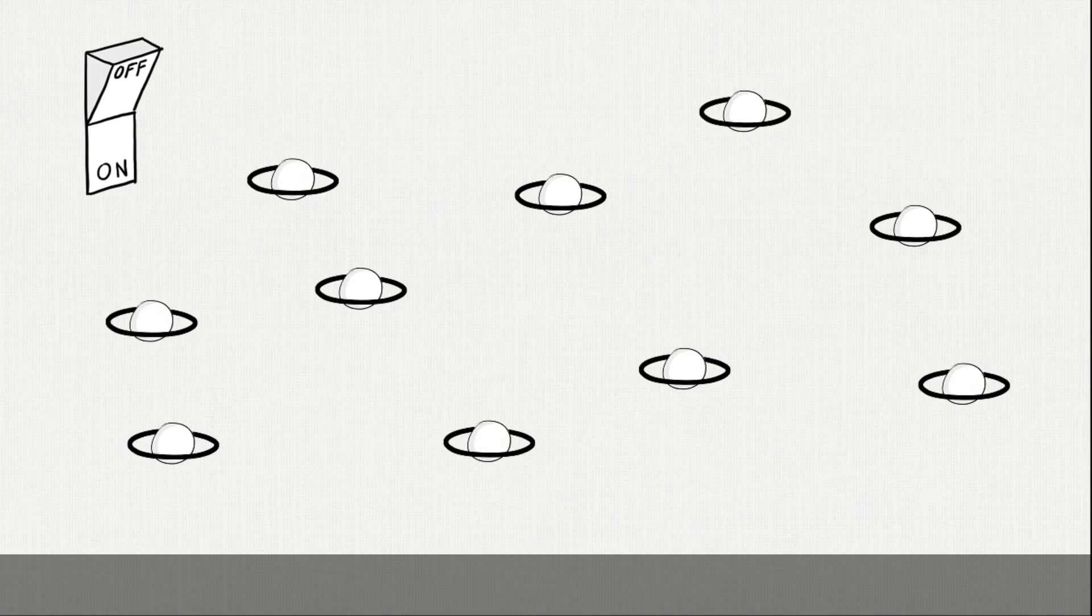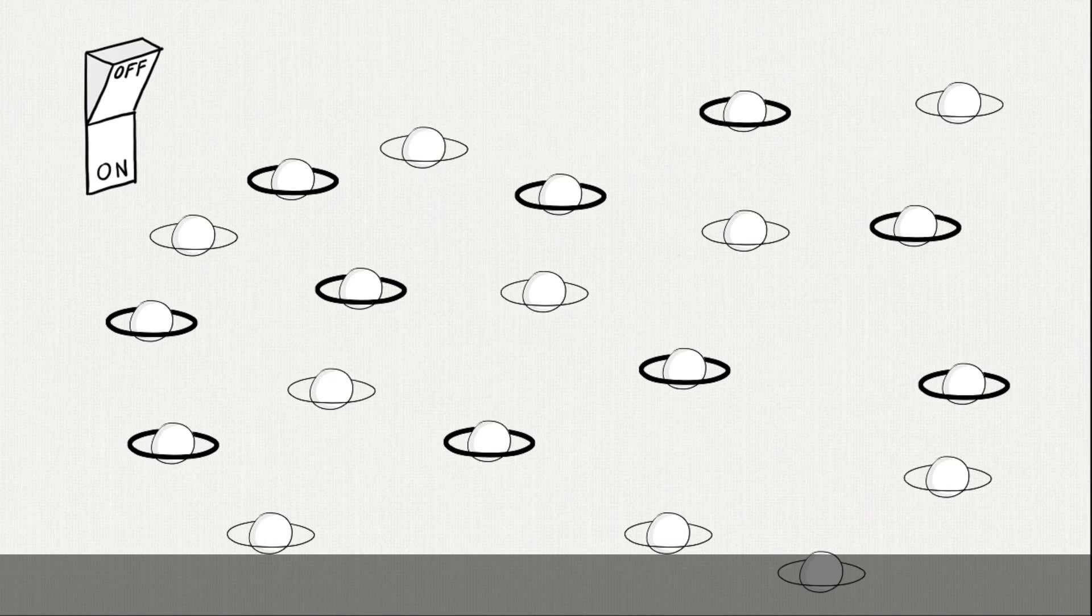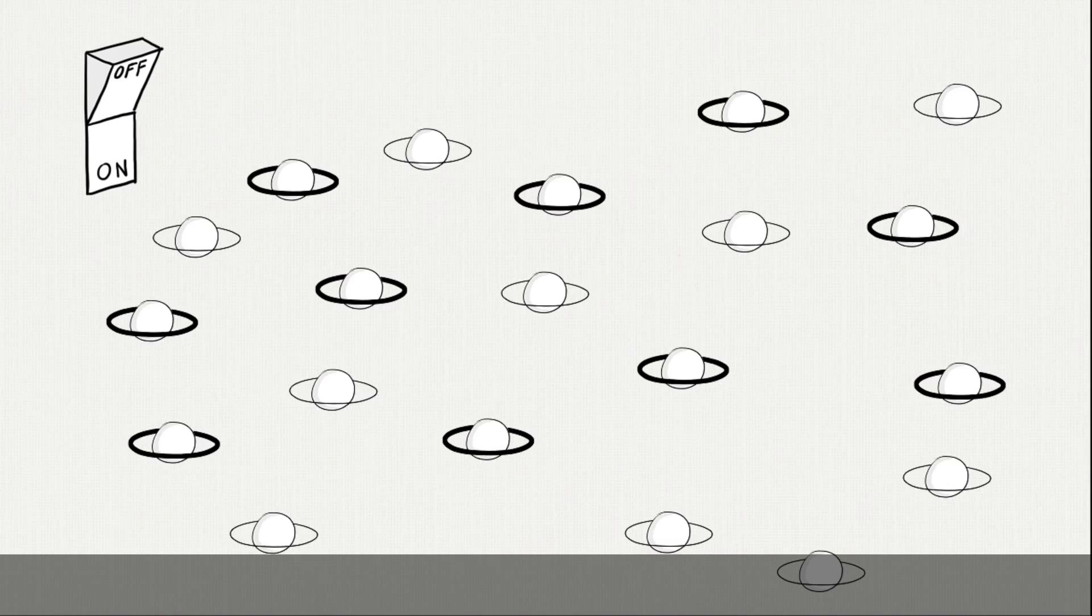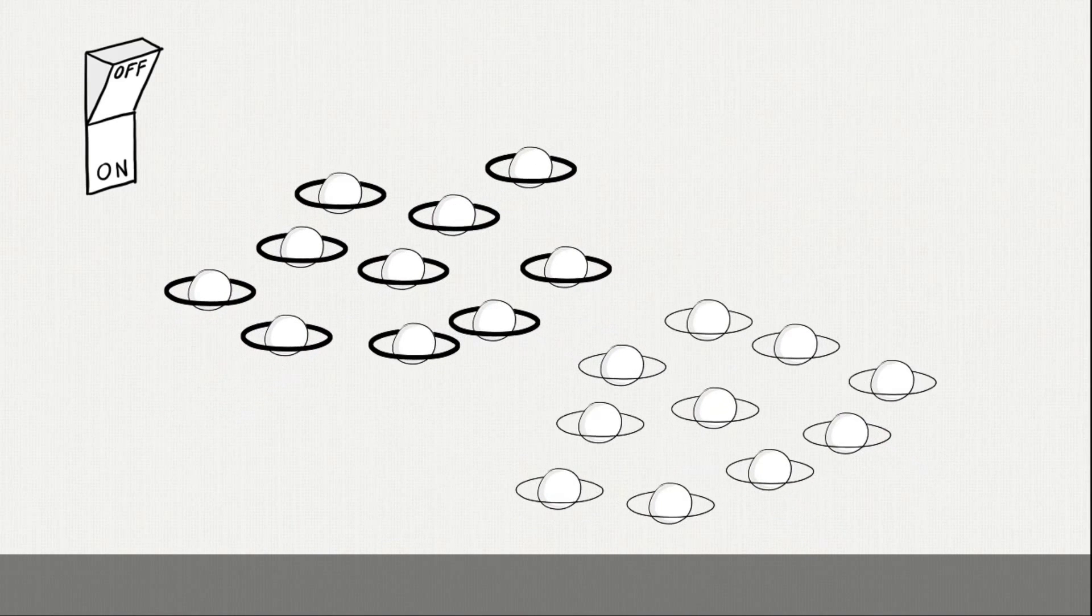Some particles react strongly to it and are given a lot of mass. Other particles are hardly affected by it and get little or no mass at all. Mass causes particles to be attracted to each other, thus forming objects, creating life.